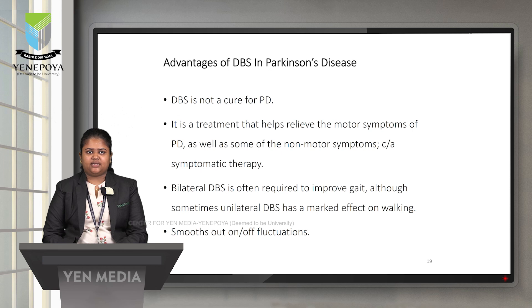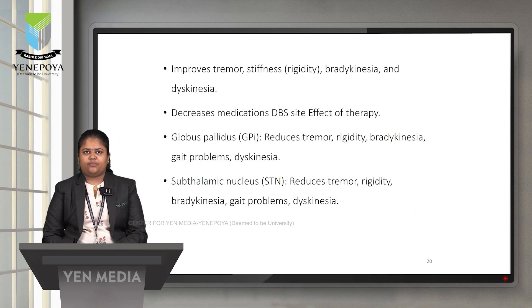Regarding the advantages of DBS in Parkinson's disease: it is not a cure but a treatment that helps relieve motor symptoms as well as some non-motor symptoms. Bilateral DBS is often required to improve gait, although unilateral DBS can sometimes have a marked effect on walking. DBS smooths on-off fluctuations and improves tremor, rigidity, bradykinesia, and dyskinesia, and decreases medication side effects. Globus pallidus stimulation reduces tremor, rigidity, bradykinesia, gait problems, and dyskinesia, as does subthalamic nucleus stimulation.